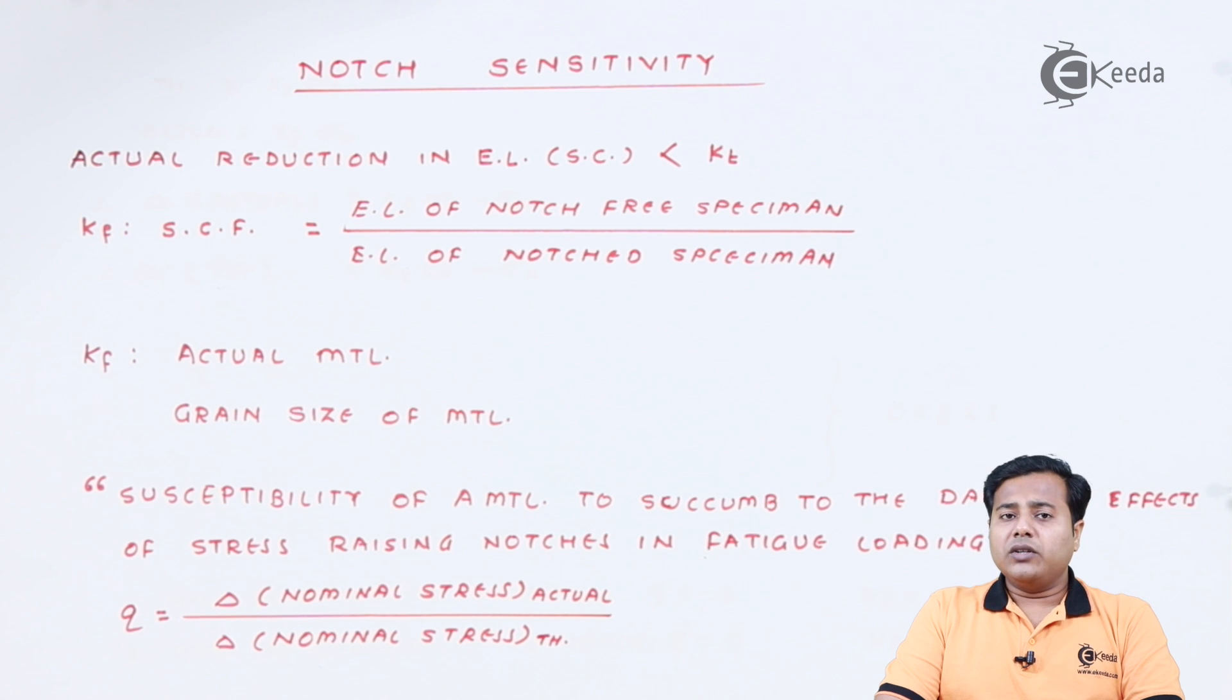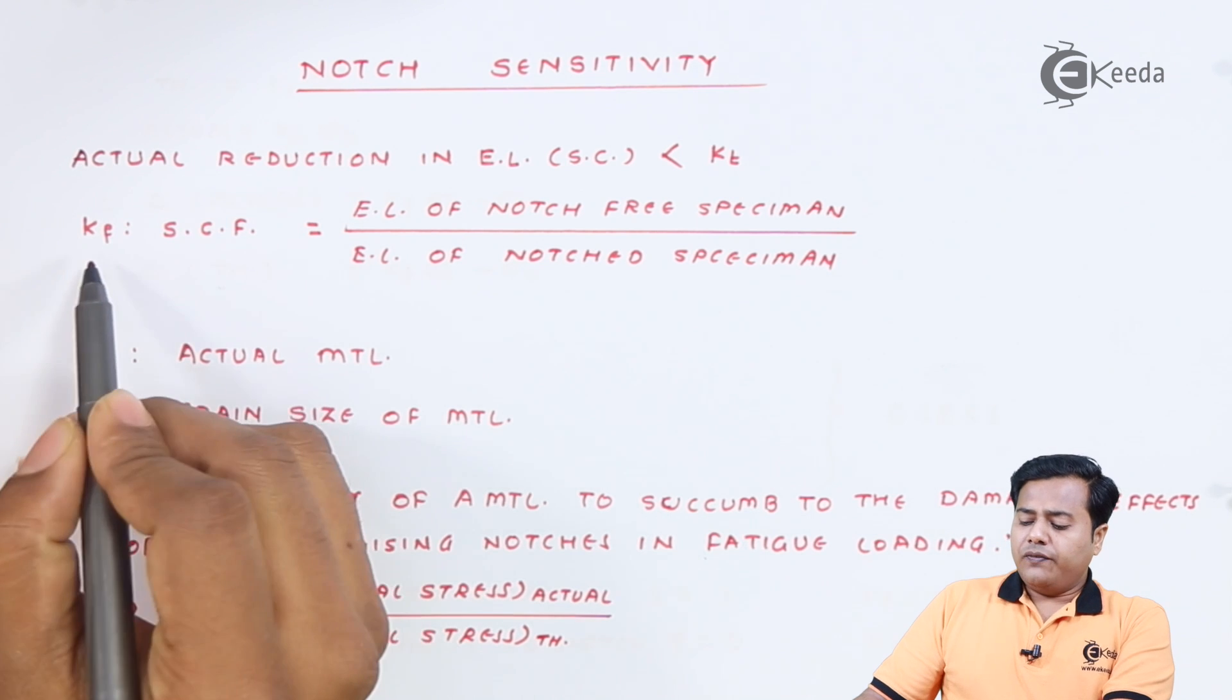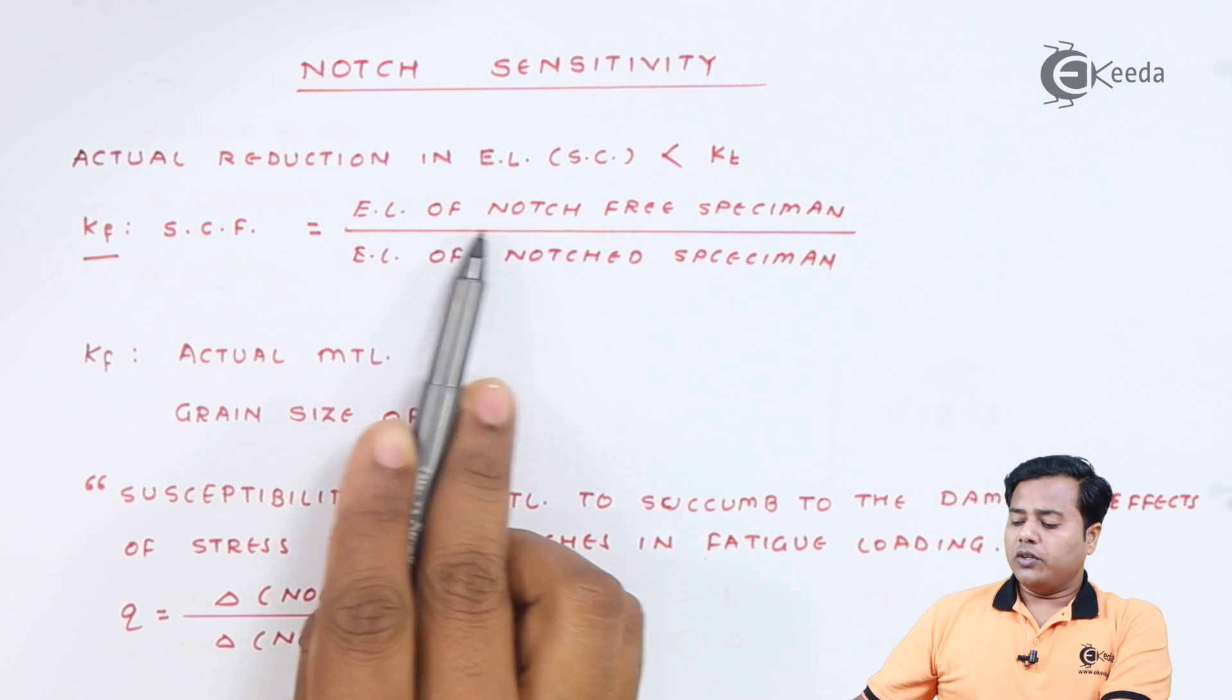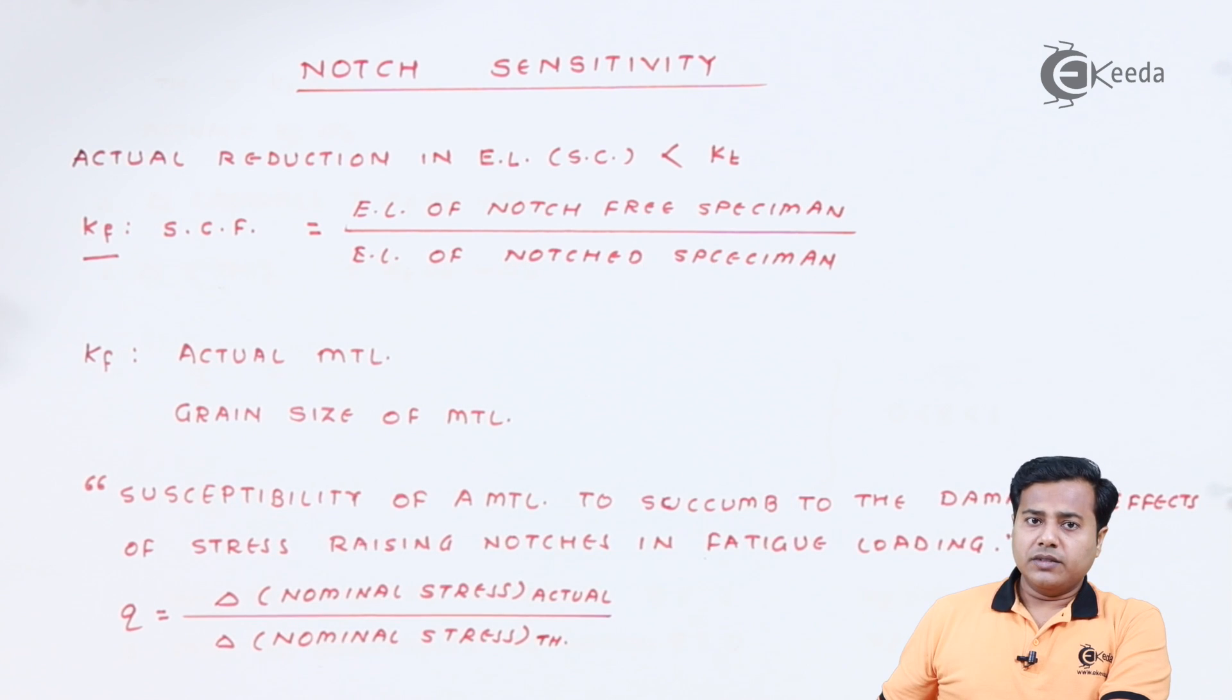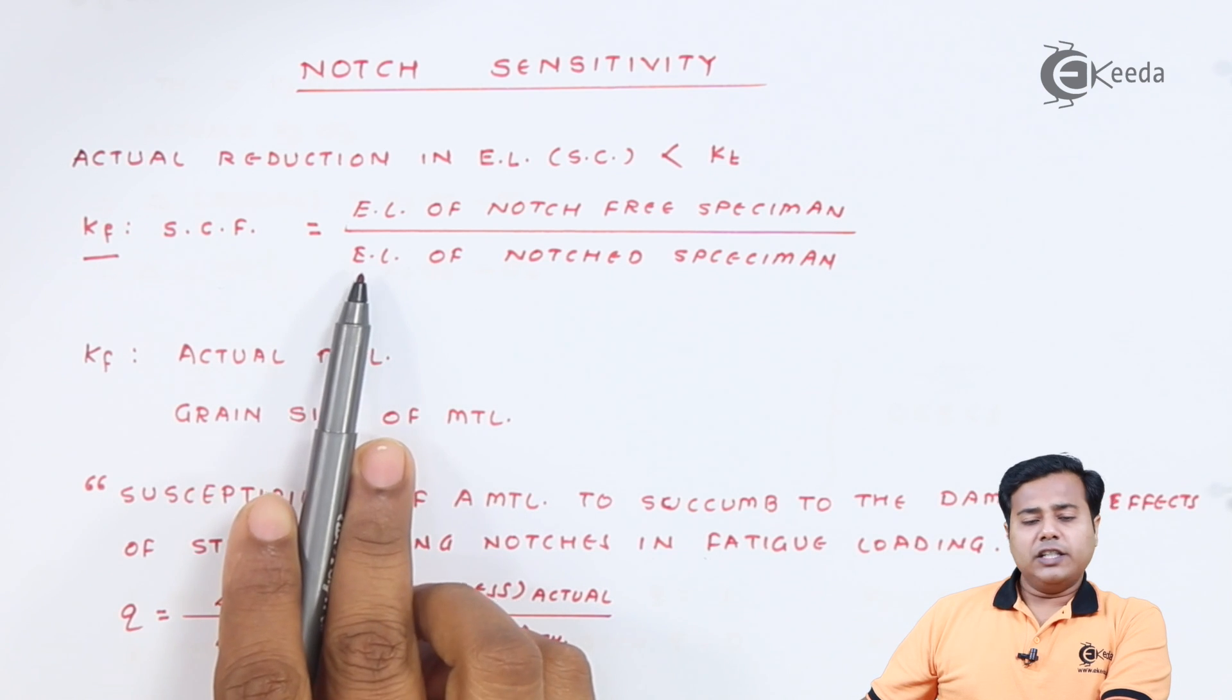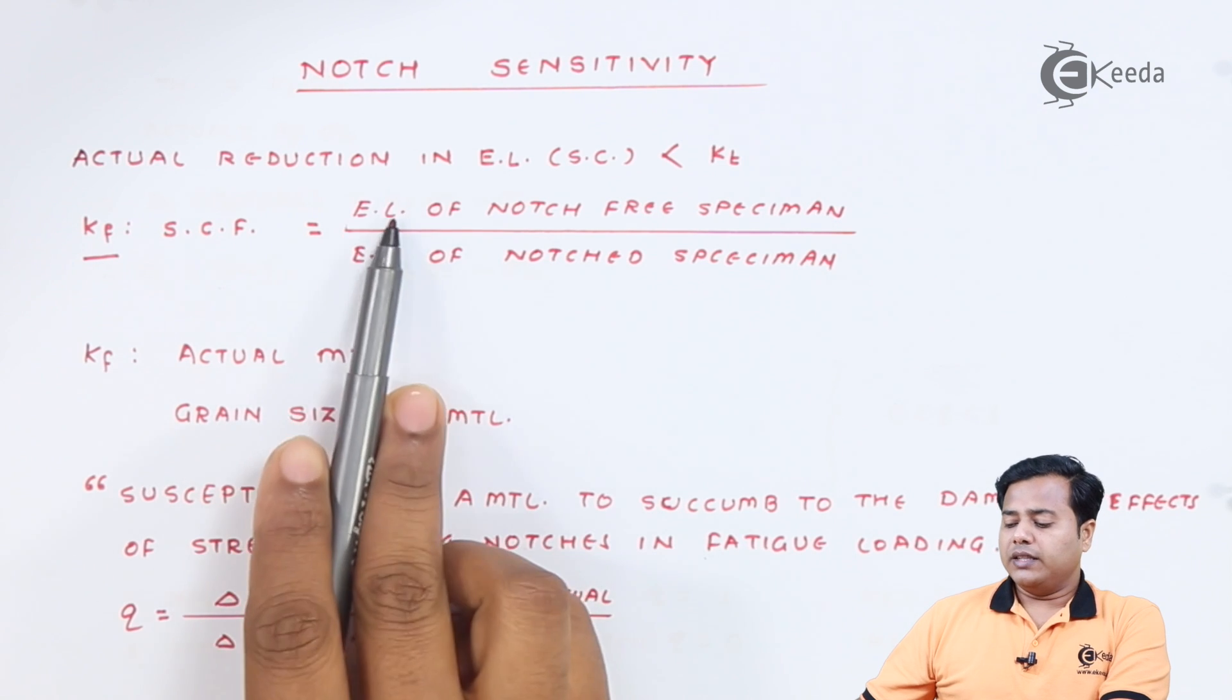Because the estimated value of the endurance limit that was supposed to come down was much more than the actual value that took place. And that's why it was found that the endurance limit value or the reduction in that has a sensitivity towards the notch. So Kf factor, that is the stress concentration factor, is defined as the endurance limit of the notch-free specimen divided by the endurance limit of notched specimen. Now it is very clear that this particular value will have a lower value than this, and that's why this particular factor will always be greater than one.